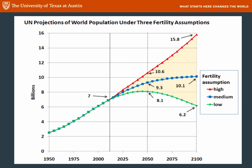Some places on Earth have already locally exceeded their carrying capacity — you can see that in many developing countries where water is in terrible supply and it's very difficult to grow crops. As part of your next assignment you'll get to look at the United Nations World Population Report and see what some of these places around the Earth look like.